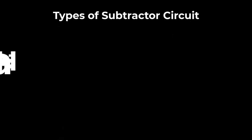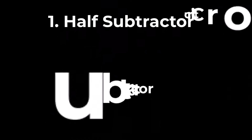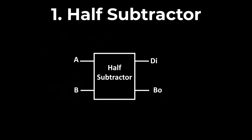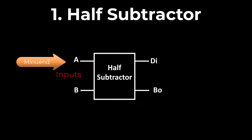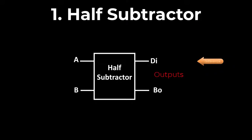Half subtractor and full subtractor. Let's explain the half subtractor with the help of its circuit diagram and truth table. A half subtractor is a combinational circuit that performs the subtraction of two single bits. It has two inputs called A and B — A is the minuend and B is the subtrahend — and two outputs called the difference and the borrow.